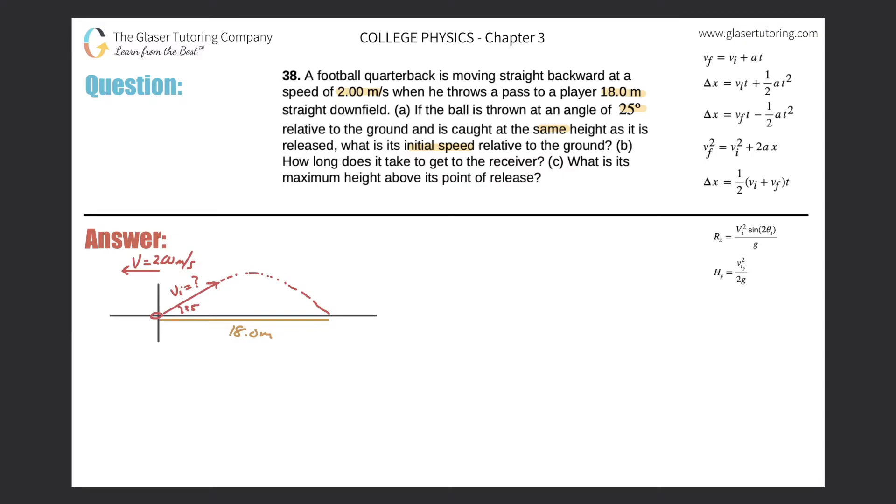So the bottom line is this. In order for the ball here to cover this distance of 18 meters and at this angle, there is only one velocity that this ball must obtain. There isn't two velocities or three. There's only one velocity.